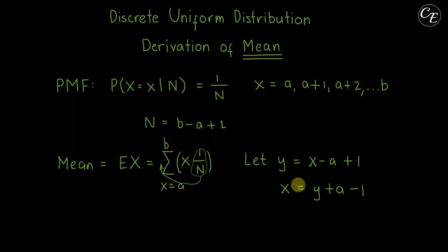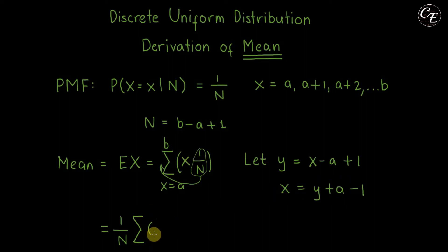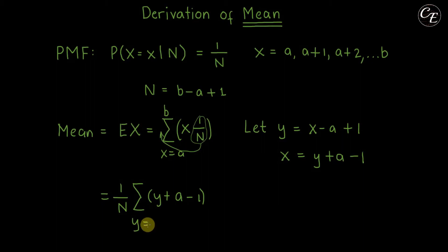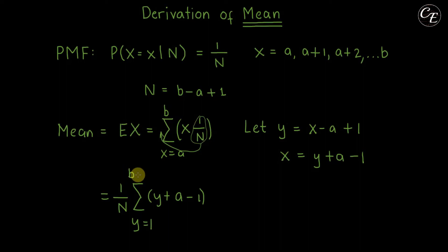This will simplify the evaluation. Let us substitute x with y plus a minus 1 and change the limits accordingly. When x equals a, y equals a minus a plus 1, which is 1. When x equals b, y equals b minus a plus 1. Since b minus a plus 1 equals n, we replace the upper limit with n.